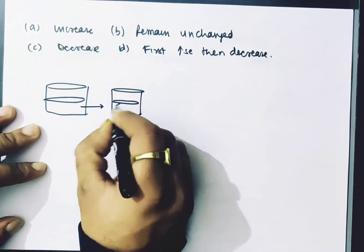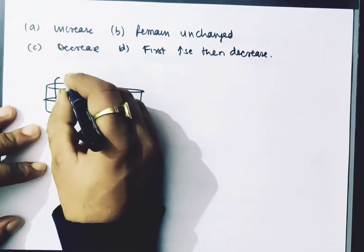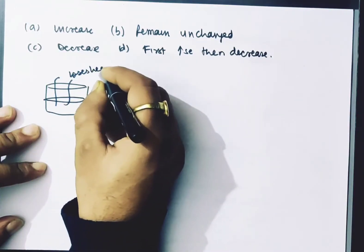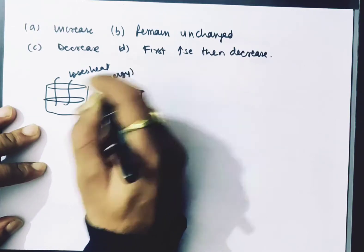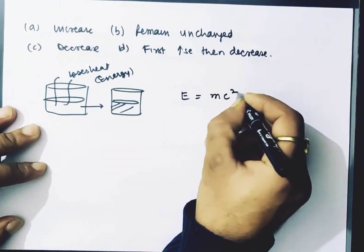Solid ice can only form when it loses heat. Heat is a form of energy. So if it loses energy, according to the mass-energy equivalence relation,